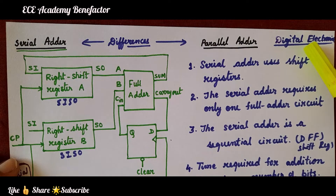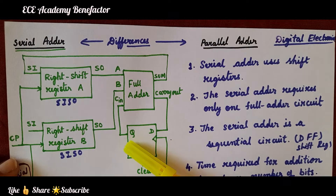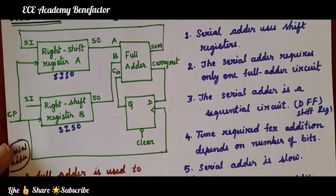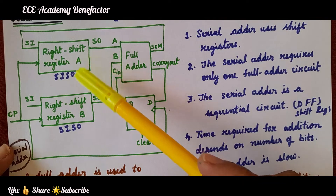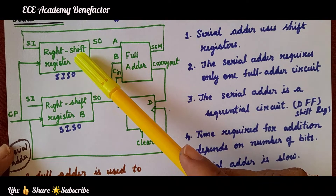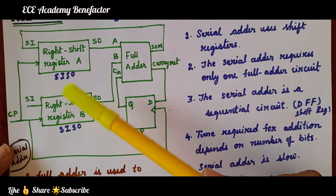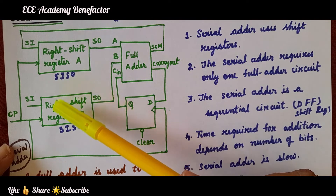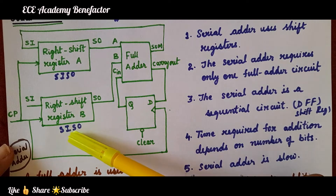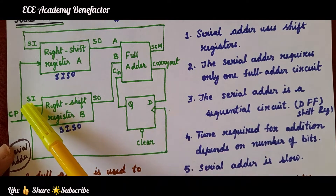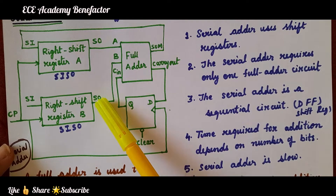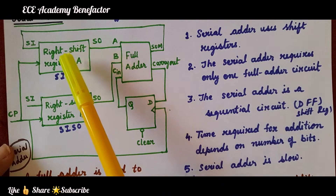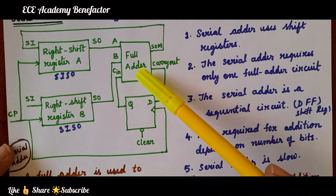Let us first see the block diagram of serial adder and then see what are the differences of serial and parallel adder. The serial adder consists of two shift registers: right shift register A and right shift register B. Both are of type serial in serial out (SISO). Serial input is coming and serial output is going. Two right shift registers and one full adder are used.